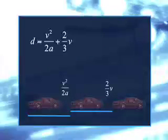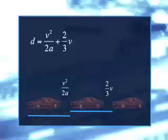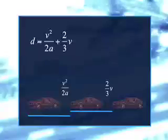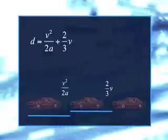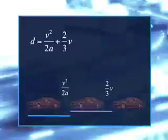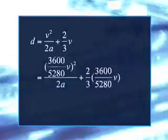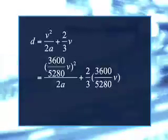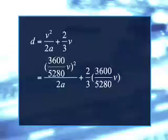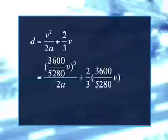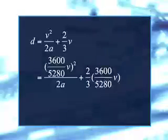Since car speed is usually expressed in miles per hour, we now need to adjust the equation so that the results are in feet, not miles. Multiply by 3600 over 5280, which converts from miles per hour to feet per second. Simplify to get the new equation.